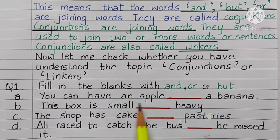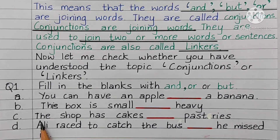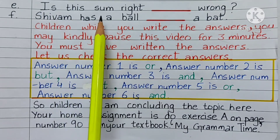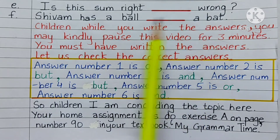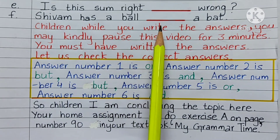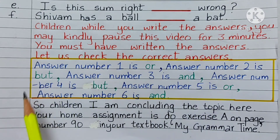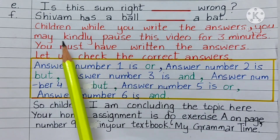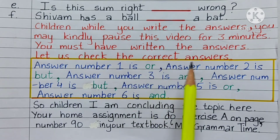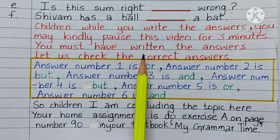Sentence 1: You can have an apple ___ a banana. Sentence 2: This box is small ___ heavy. Sentence 3: The shop has cakes ___ pastries. Sentence 4: Ali raced to catch the bus ___ he missed it. Sentence 5: Is this answer right ___ wrong? Sentence 6: Shivam has a ball ___ a pad. Children, while you write the answers, kindly pause this video for 3 minutes.